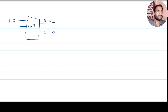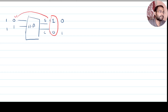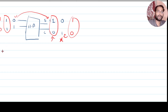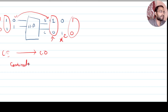Now let us take another set of inputs: 1 and 1. The output is 1 plus 1 — sum is 0 and carry is 1. If you see this output we got previously because of that input, it has no role when we are giving a new set of inputs. Whatever the previous output or previous input was, it is not affecting what the next output will be. For example, if I take 1 and 0, the output becomes sum 1 and carry 0. Whatever output we get here is not dependent on the previous output. The output is directly related to the current input — this type of circuit we call a combinational logic circuit.